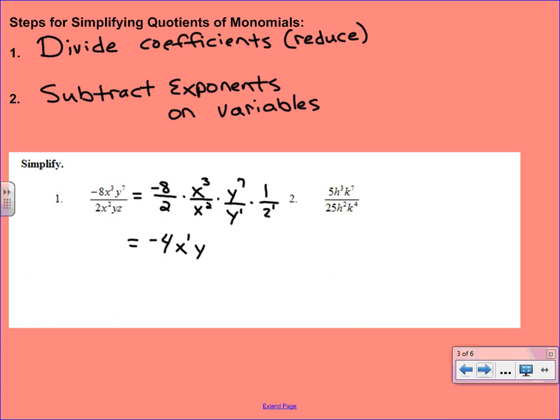Same thing with the y. When you subtract those, you get y^6. And then we're multiplying this by 1 over z. And when you do that, when you multiply straight across, that z is just going to stay on the bottom. So that ends up being our final answer.